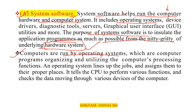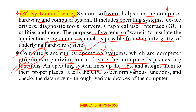Computers are run by operating systems, which are computer programs organizing and utilizing the computer's processing functions. The operating system lines up jobs and assigns them to their proper places. It tells the CPU to perform various functions and checks the data moving through the various devices of the computer — all of which is handled by the system software.